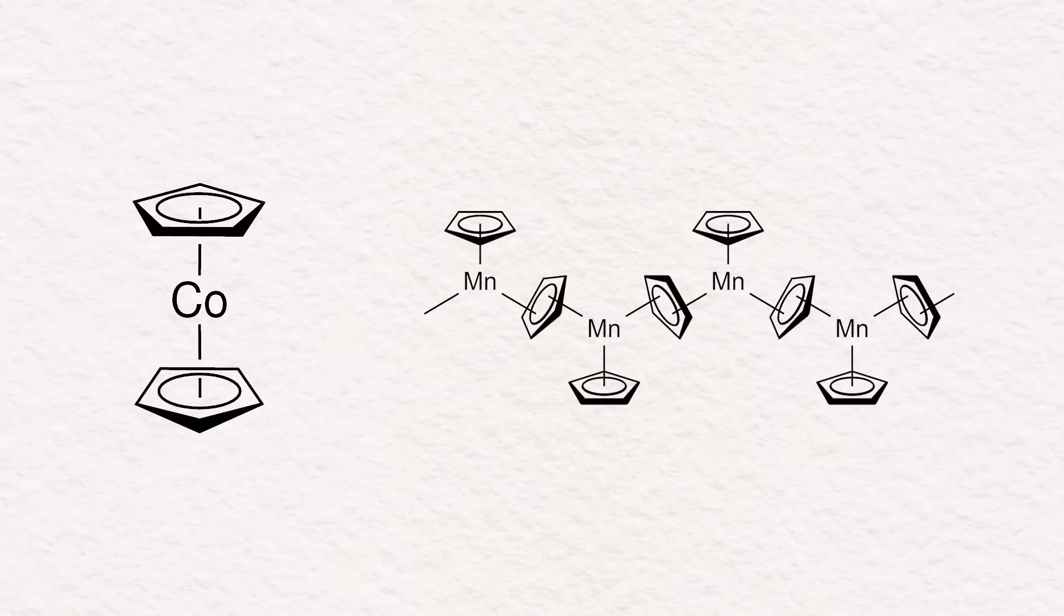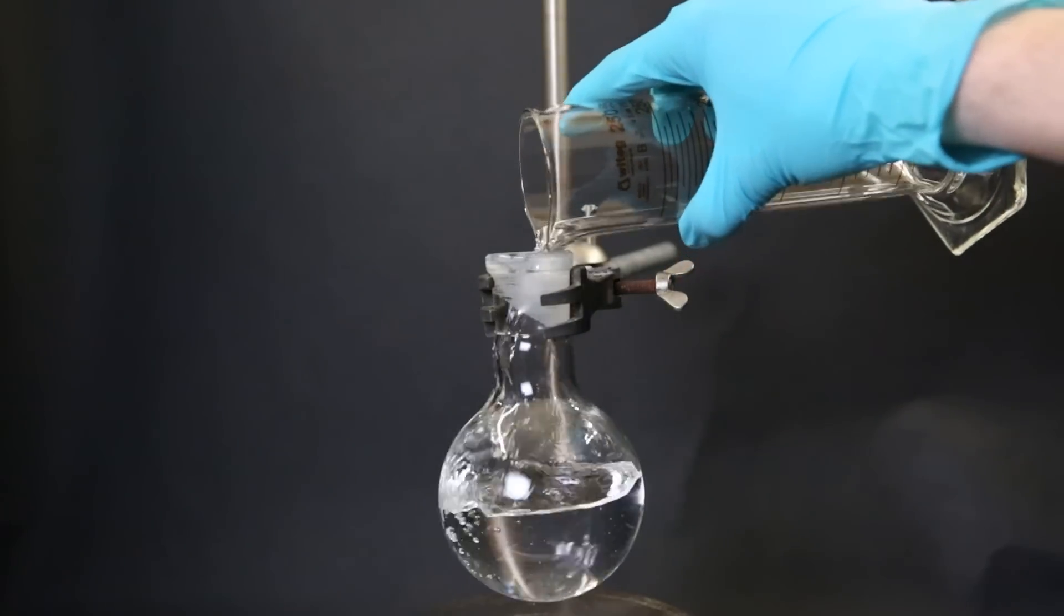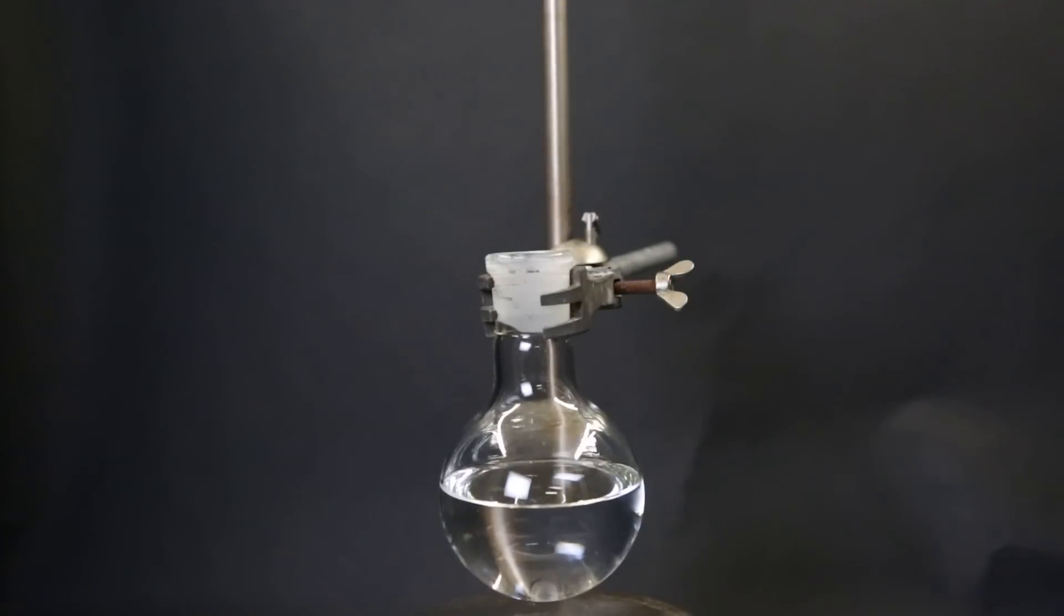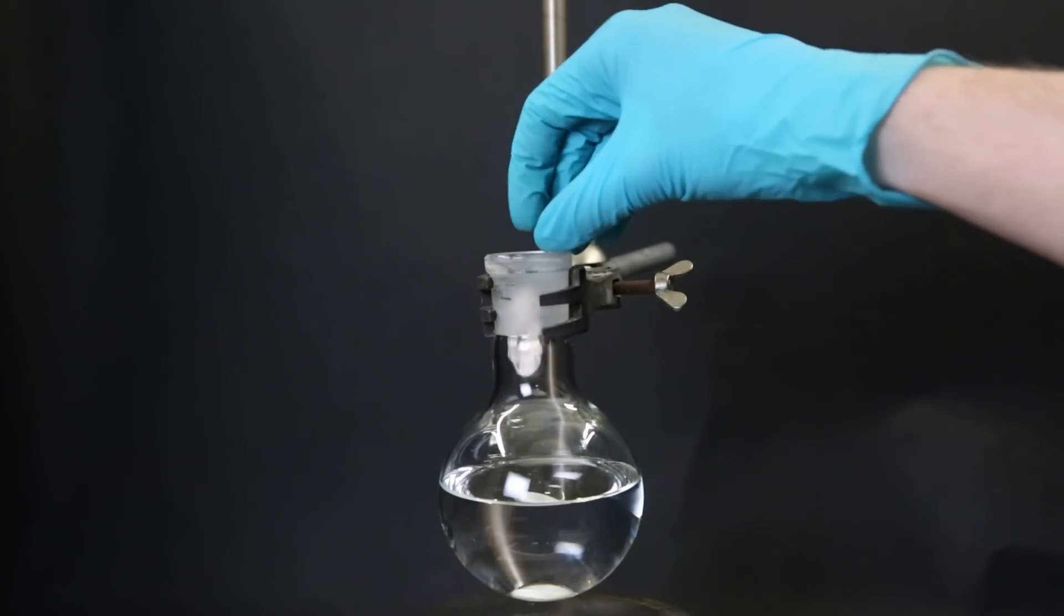The first step is to prepare a solution of the cyclopentadienide ion again, but this time in its sodium salt form. To do that, I fill up a flask with 155 mls of THF. I drop in a stir bar and then add in 8.6 grams of sodium metal that I made in a previous video.